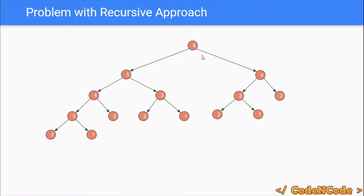The second property is the optimal substructure property. This states that to calculate the result of a problem, you can break it into subproblems, solve those subproblems, and then use their results to calculate the result of the actual problem. For n equals 6, we break the problem into two subproblems — n equals 5 and n equals 4 — and using their results we calculate the final answer. This is optimal substructure.